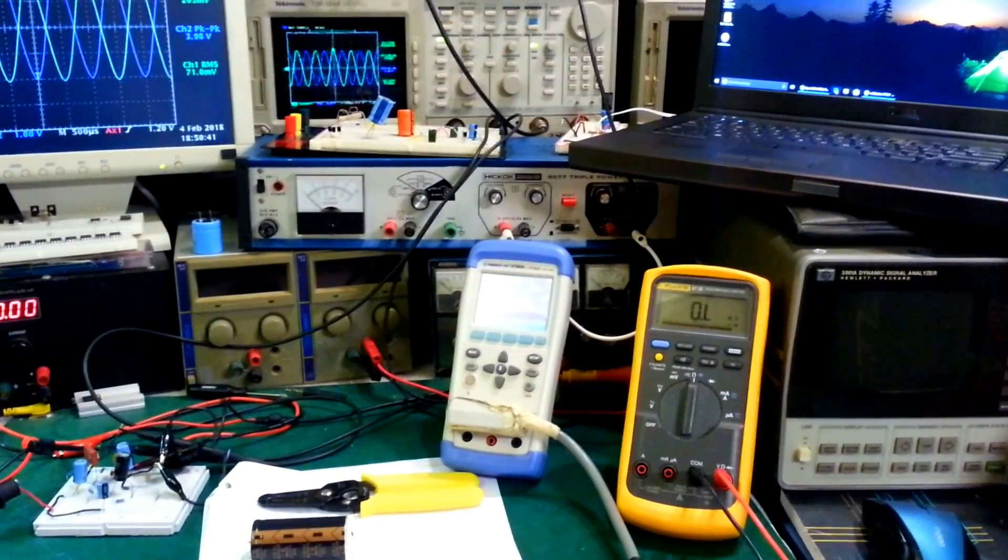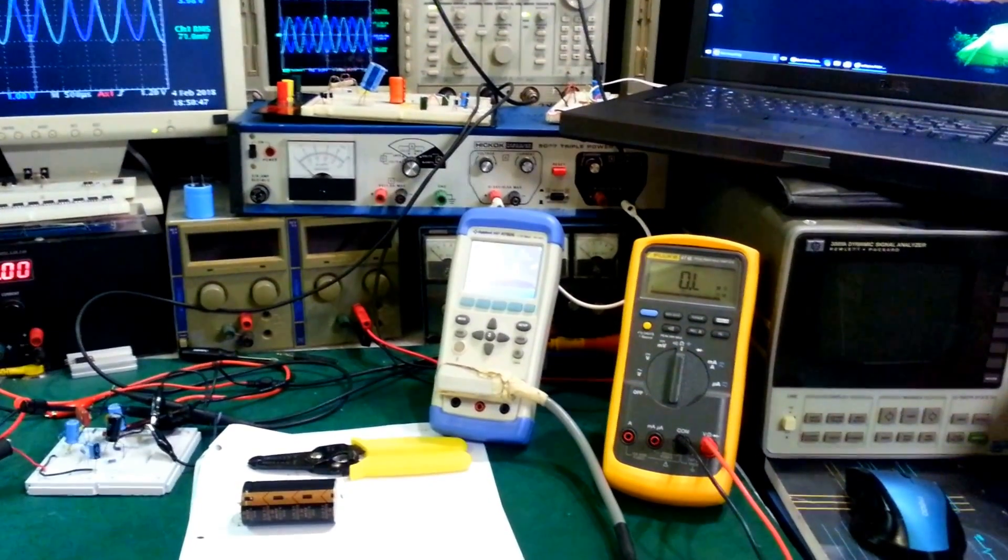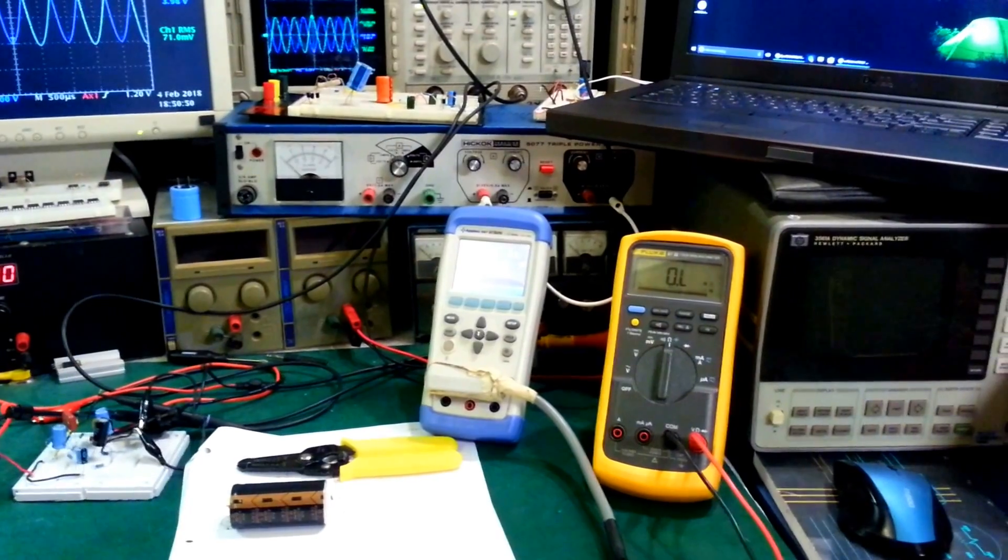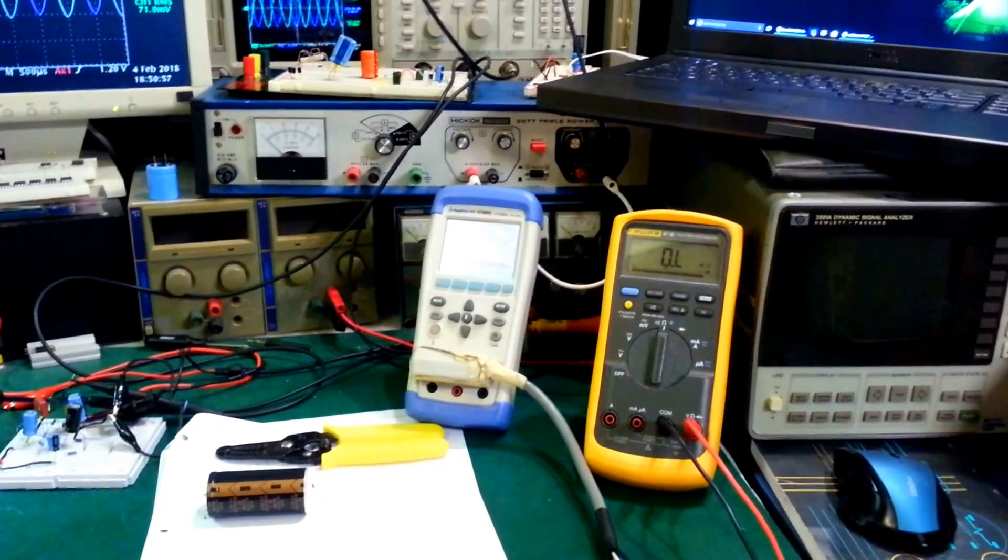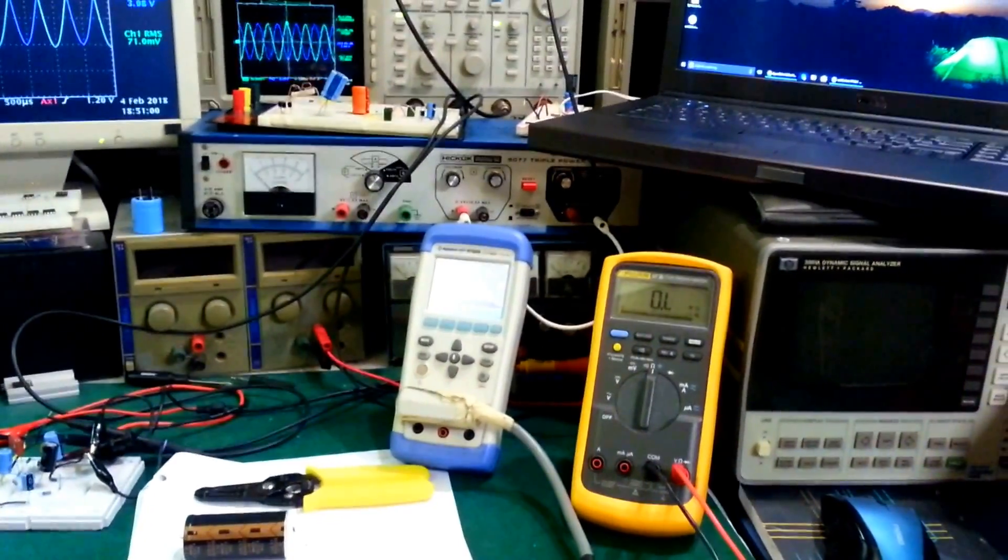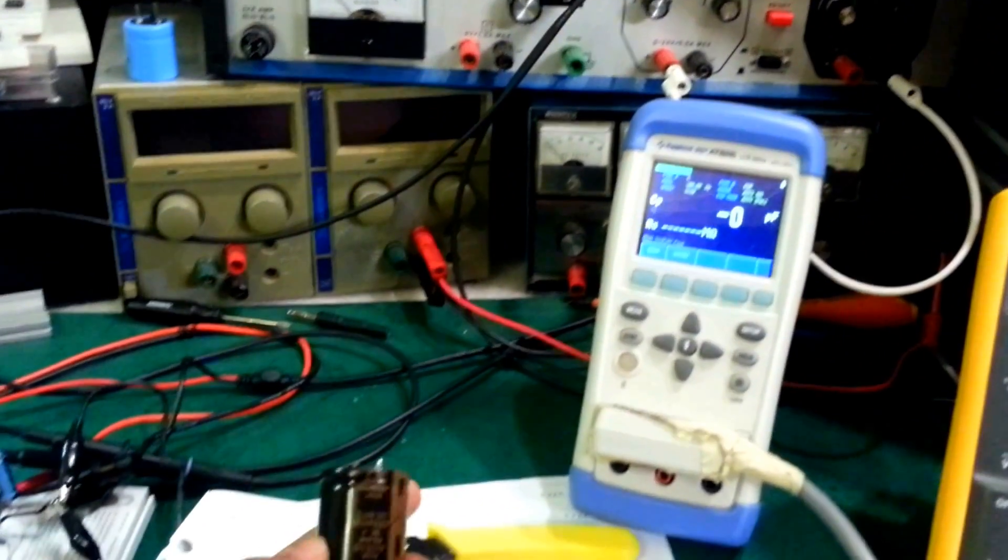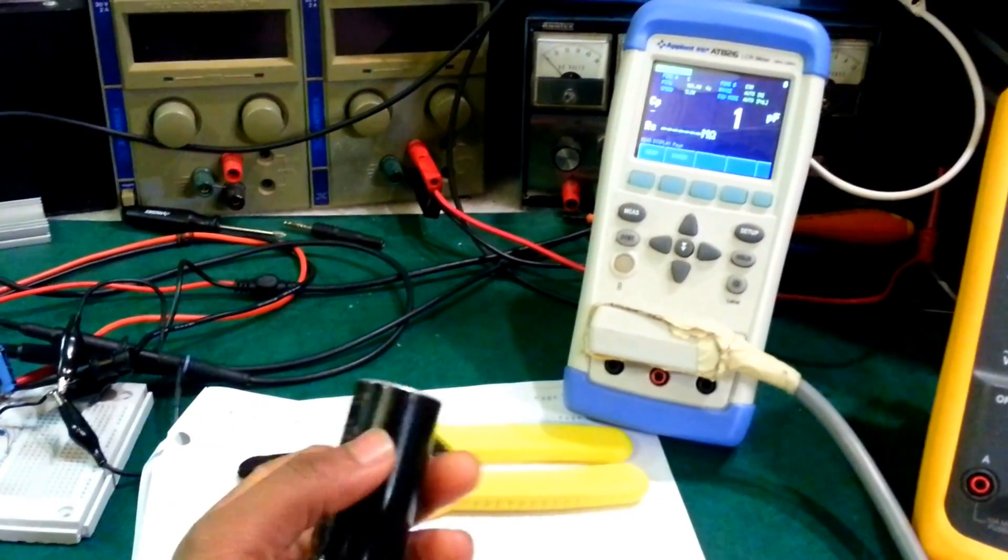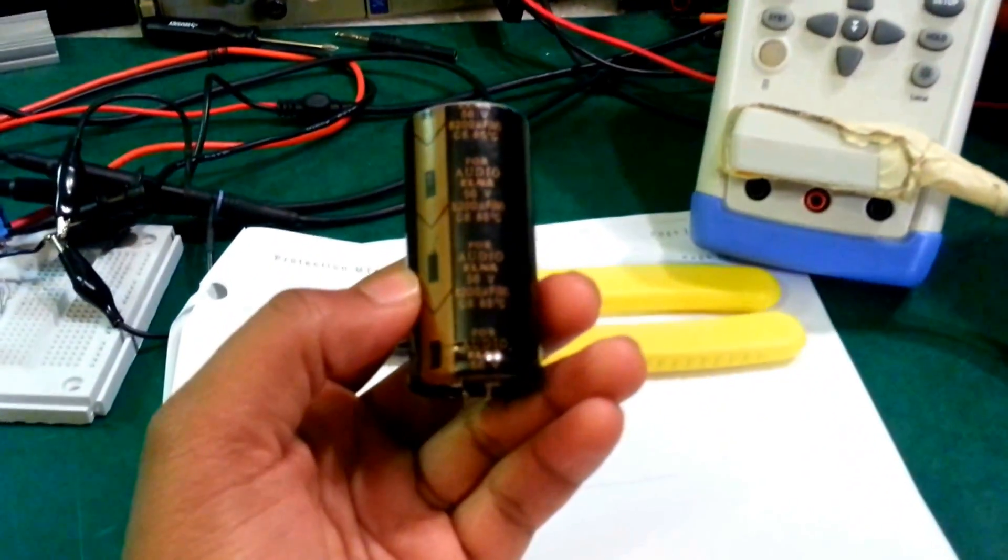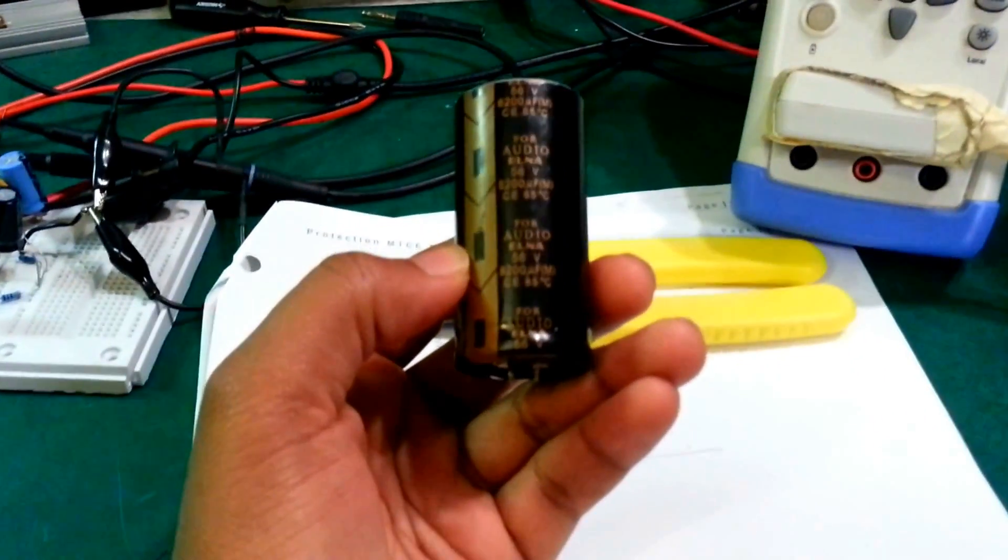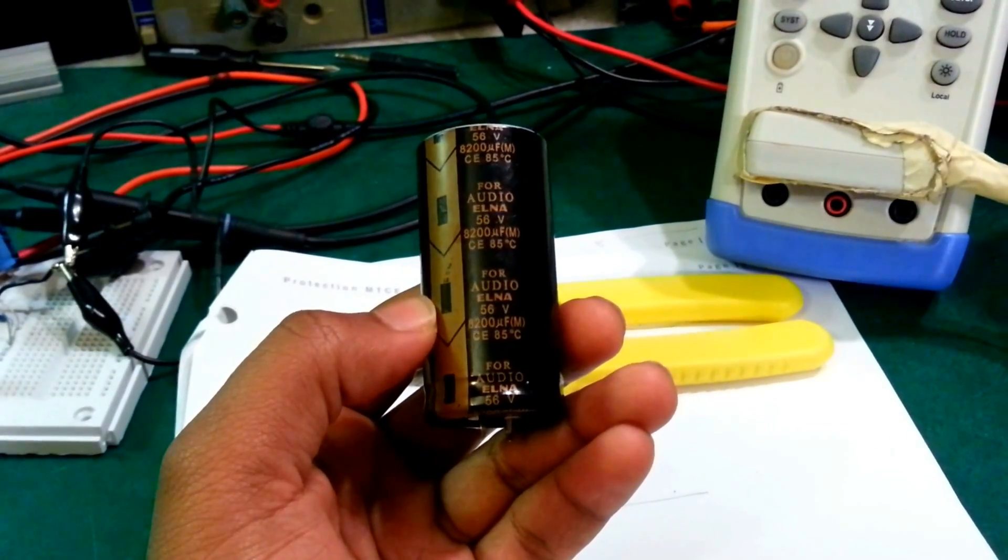I'm working on a high voltage, high current power supply where I needed quite a bit of capacity for filter capacitors. So I bought a couple of them for about $19, about $8 each. They arrived recently. The value that I bought, if we take a look here, this one says 8200 microfarads at 56 volts and it says for audio.